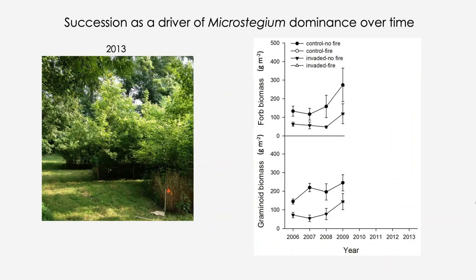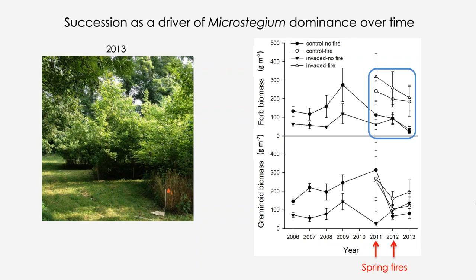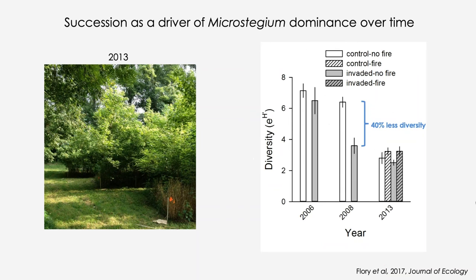The change in Microstegium dominance over time had significant consequences for native species. Broadly grouping by functional group — native forbs and graminoids — early on when Microstegium was dominant there were significant impacts on both functional groups. We then saw variable impacts once Microstegium went into decline and we applied spring fires. Notably, the application of fire resulted in much greater forb biomass. Species diversity also changed dramatically — in 2006 there was essentially no difference in native species diversity, whereas in 2008 there was 40% less diversity in invaded plots, and by 2013 essentially no difference.